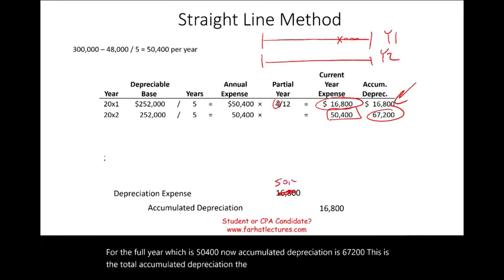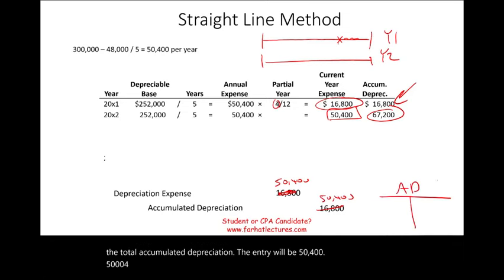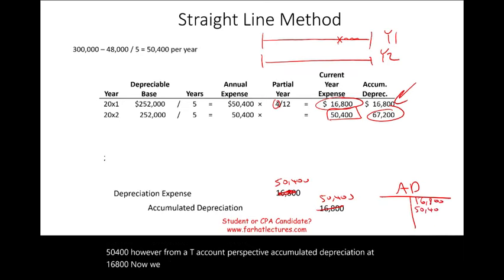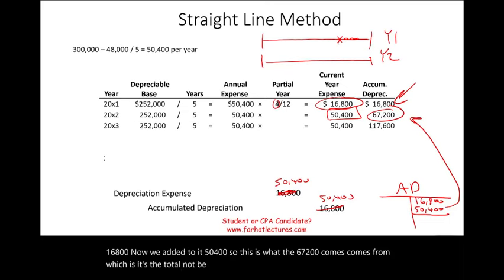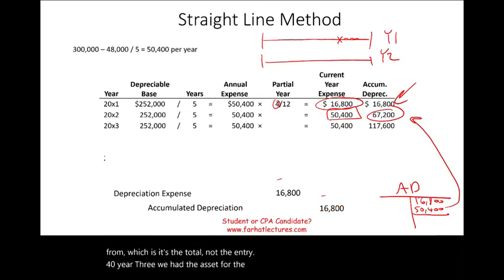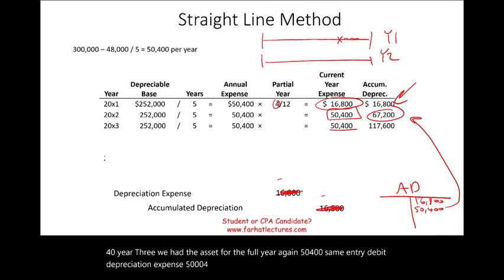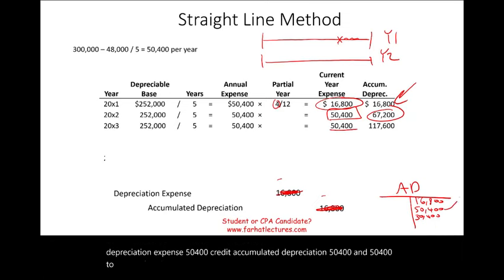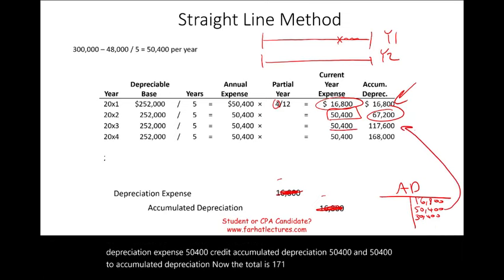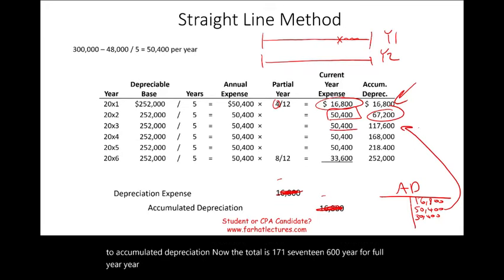The entry for year two is $50,400. From a T-account perspective, accumulated depreciation started at $16,800, then we added $50,400, giving us $67,200 total. For year three, we had the asset for the full year again — $50,400. Debit depreciation expense $50,400, credit accumulated depreciation $50,400. Adding that brings total accumulated depreciation to $117,600. Year four — full year. Year five — full year. And year six as well.